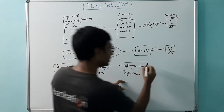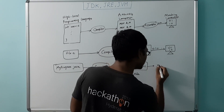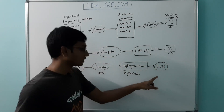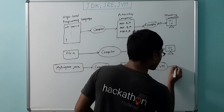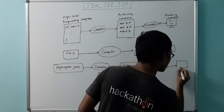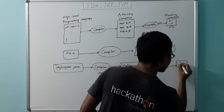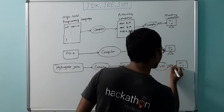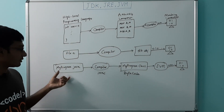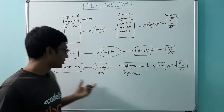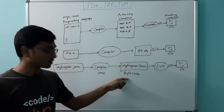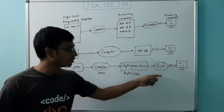This bytecode is read by the JVM — Java Virtual Machine. The JVM actually converts bytecode into machine code. This is how a Java program is executed — this is the flow of execution, and the JVM here is translating the bytecode into machine code.